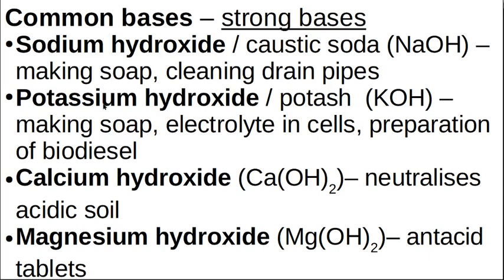Potassium hydroxide, also called potash or caustic potash (KOH), is also used to make soap. In the old days they used to call it lye — lye soap (L-Y-E). Potassium hydroxide is also used as an electrolyte in cells — batteries, not prison cells. It is also used to make biodiesel.